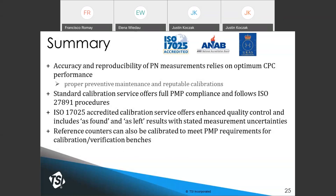In summary, the accuracy and reproducibility of particle number measurement relies on optimum CPC performance. These CPCs need proper preventive maintenance — replacing the internal wick, filters, cleaning nozzles — and then a reputable traceable calibration to a national standard using ISO 27891 procedure, keeping all PMP requirements for CPC calibrations. All TSI calibrations are PMP compliant and follow ISO 27891.